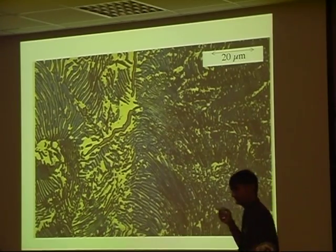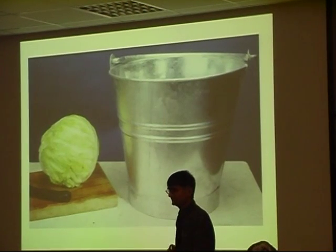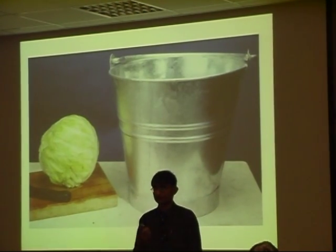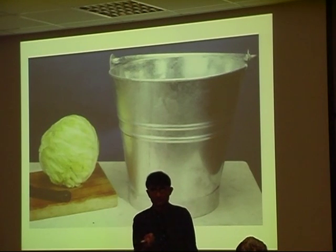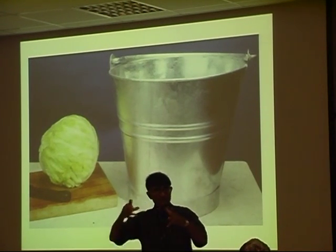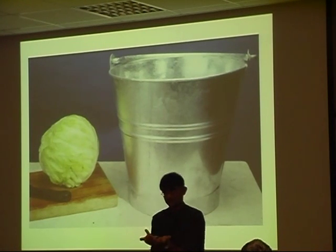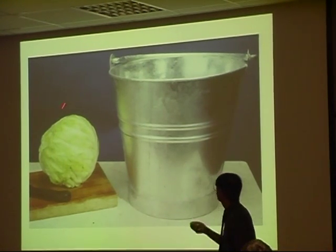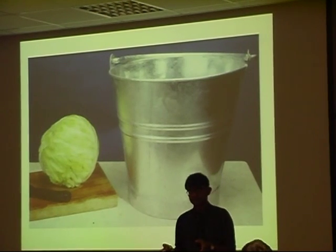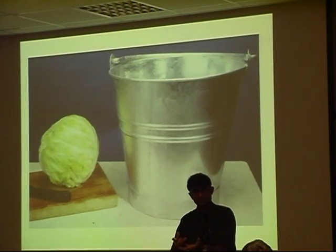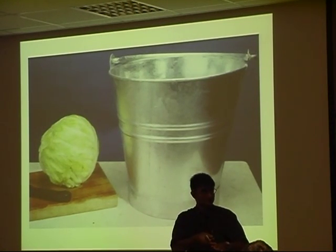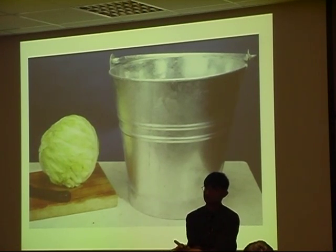But it is misleading. The true structure is like this. Think of the cementite as the leaves of a cabbage. They are all connected in three dimensions. So it's a single crystal of cementite. And you put that cabbage in a bucket of water. Then the water is the single crystal of ferrite. And when I cut the cabbage, I see alternating layers of cementite, ferrite, cementite, ferrite. But in three dimensions, it's a bi-crystal of cementite and ferrite.